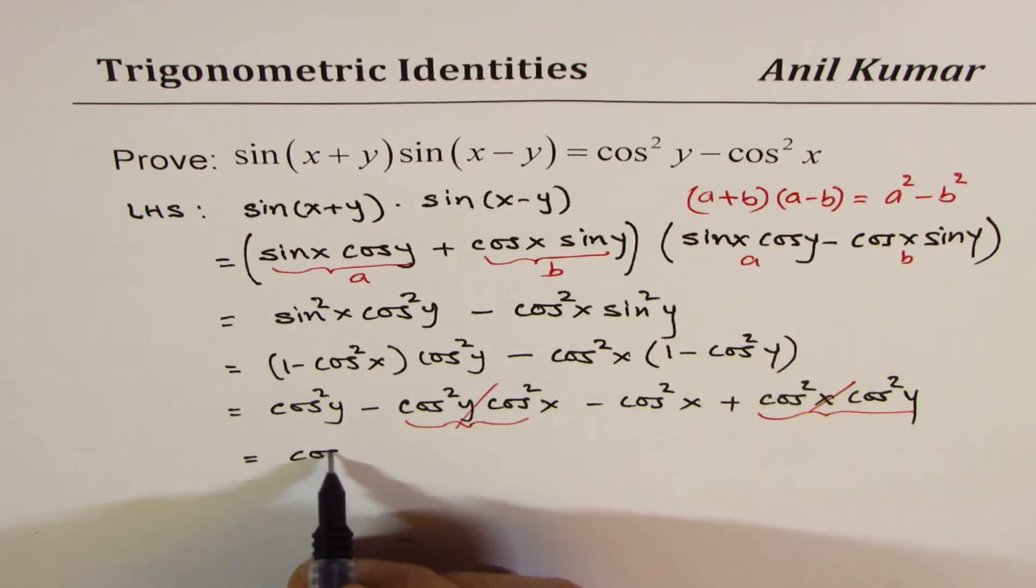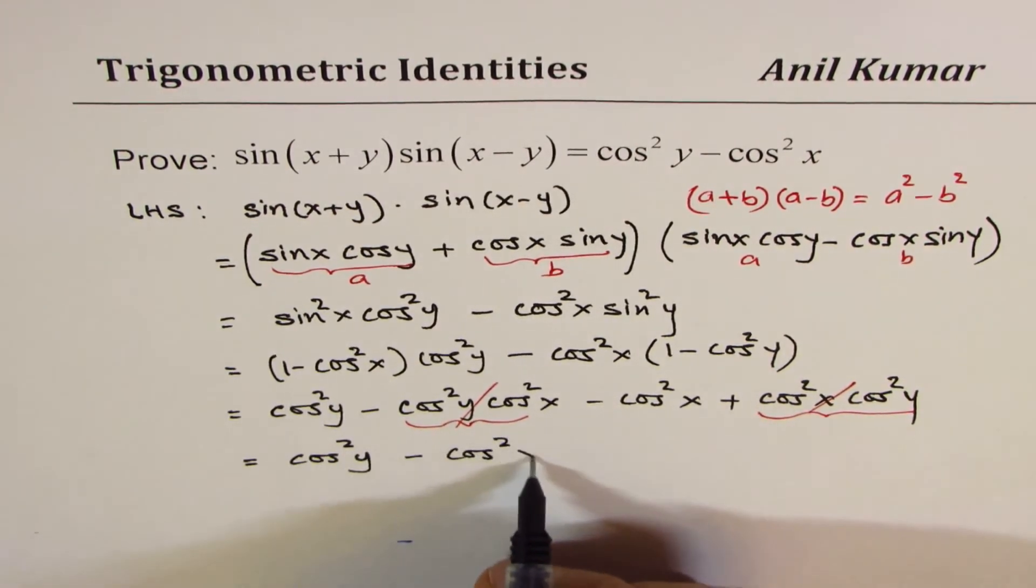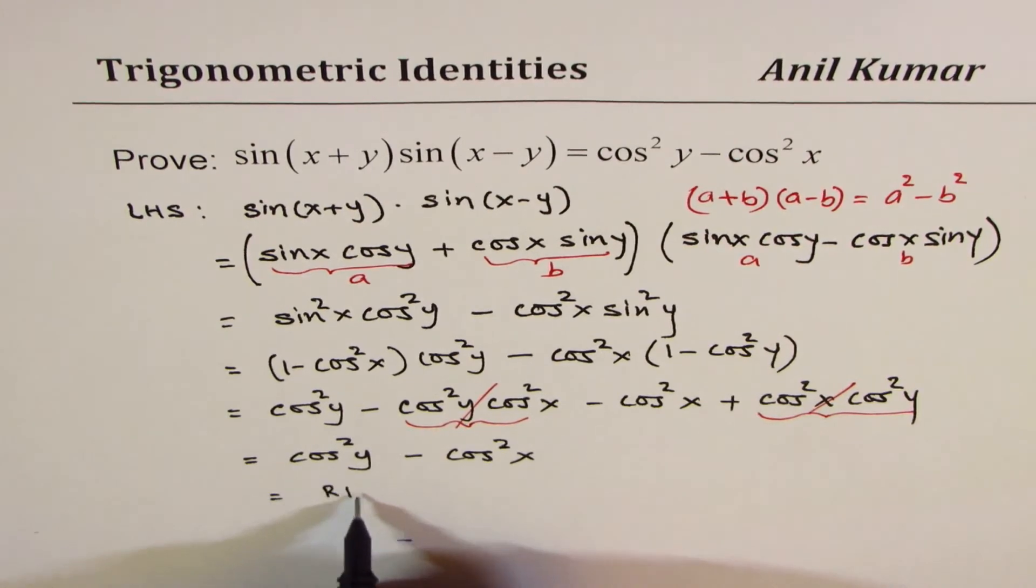So we are left with cos²y minus cos²x, which is same as the right-hand side.